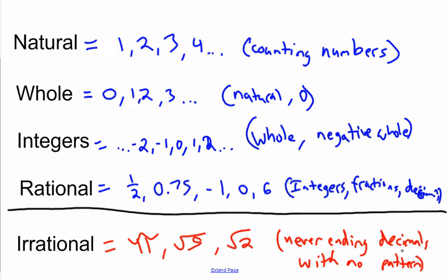Never-ending decimals with no pattern. So there's your list of all the real numbers, the four types, five types actually. Those are the subsets of all the real numbers. Those are worth noting.